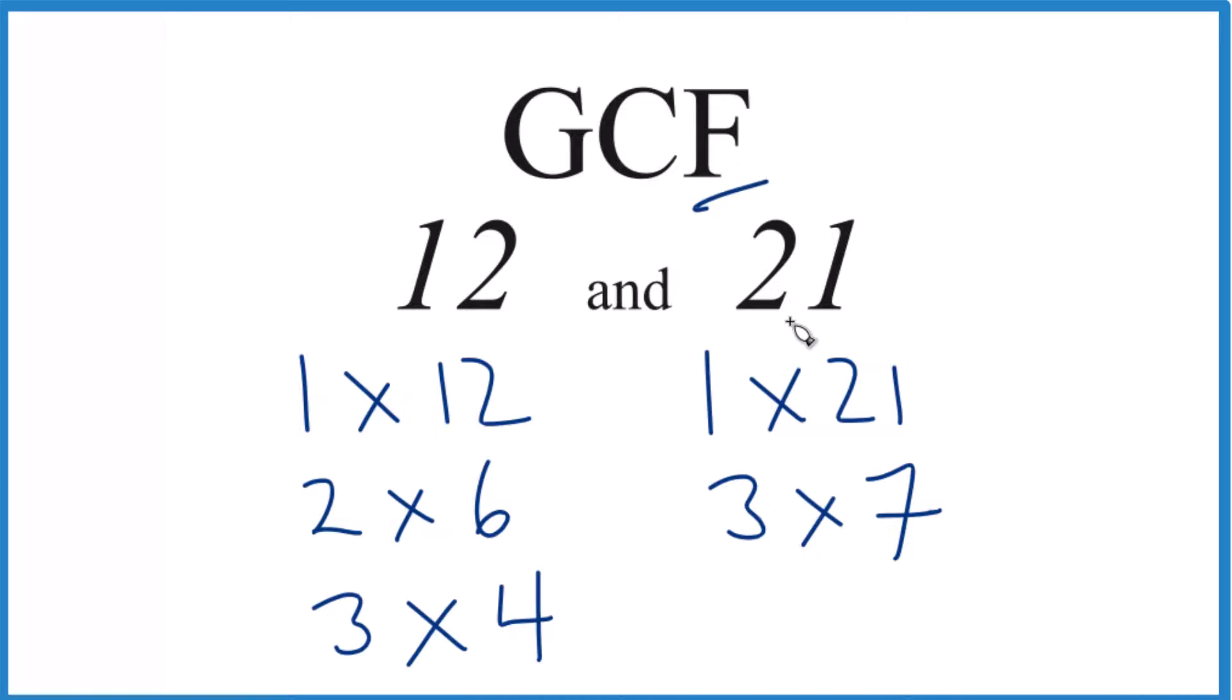So we have our factors. Let's see what's in common. 1 goes into 12 and 21 evenly—that's a common factor. And then 3 goes into 12 and 21 evenly, but that's it. So 3 is the greatest common factor between 12 and 21.